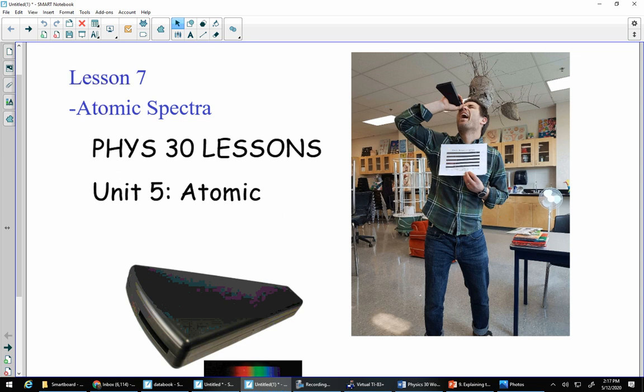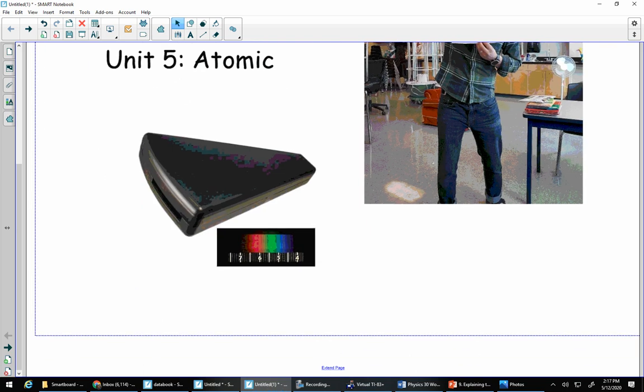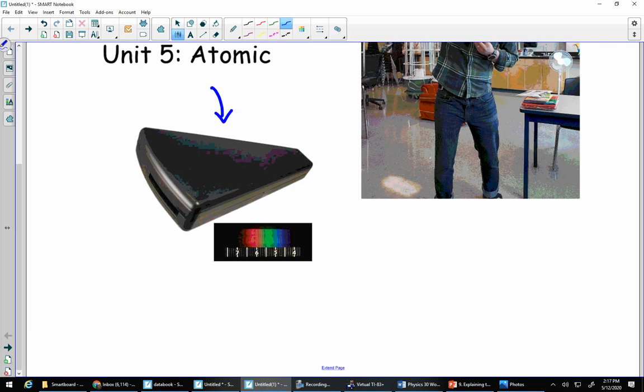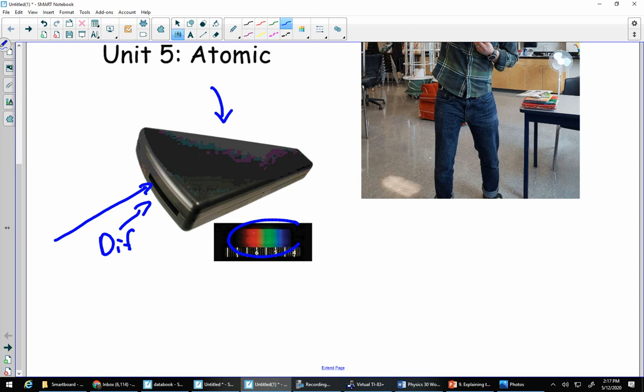So, in order to see atomic spectra, we need something called a spectroscope. So here is a spectroscope. Now, there's a bunch of different ways that this can work, but the ones that we have in the school have a diffraction grating at one end, and then they have an eye hole at the other end. So essentially what happens is light comes in here, it diffracts, it splits apart into its components. And then you can see the different colors off to the side here.